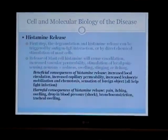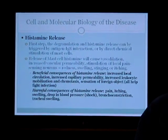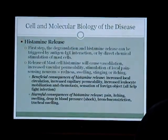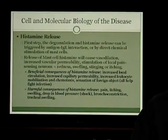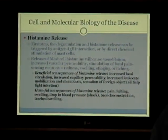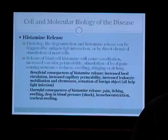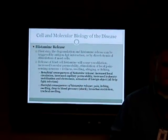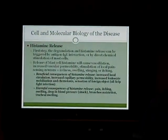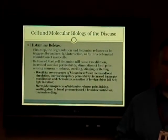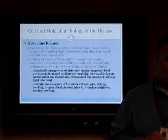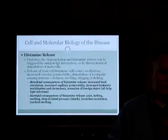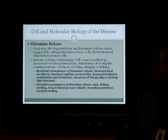The release of histamine: degranulation can be triggered by antigen-IgE interaction specifically, or by direct chemical stimulation of mast cells. The release of mast cell histamine will cause vasodilation, increased vascular permeability, and stimulation of local pain-sensing neurons, which can be felt as redness, swelling, stinging, or itching. The beneficial consequences of histamine release are increased local circulation, increased capillary permeability, increased leukocyte mobilization and chemotaxis, and sensation of a foreign object — all of these will help to fight the infection.